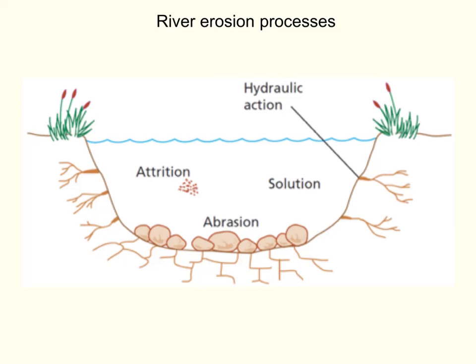Let's have a think about how river erosion processes work. Here we've got the cross-section through a river channel and we've got the four main methods of erosion highlighted on the diagram. Let's talk about each one in turn.